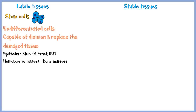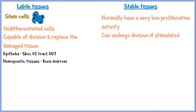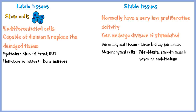Stable tissues normally have a very low proliferative activity. However, they can be stimulated to undergo cell division and replace the damaged tissue following an injury. These include parenchymal tissues like liver, kidney and pancreas, and mesenchymal cells like fibroblasts, smooth muscle cells and vascular endothelial cells.